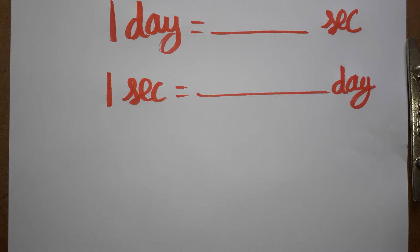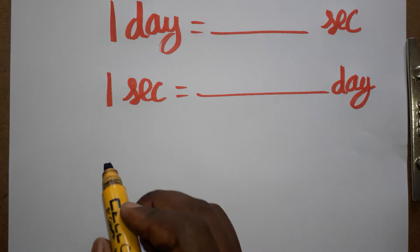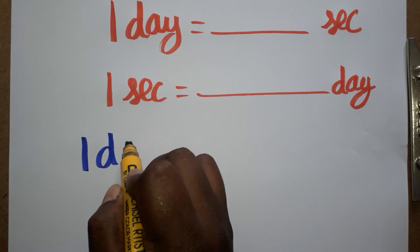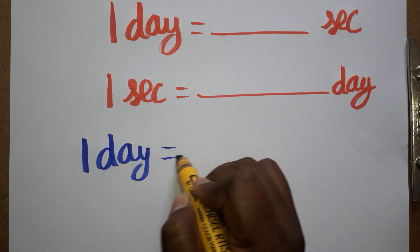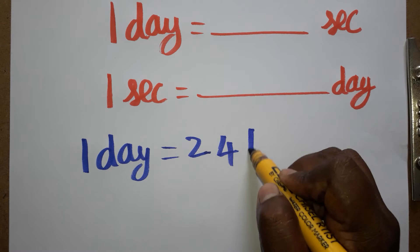Hello student, today we are going to see one day equals dash seconds, and one second equals dash day. First we will see one day equals dash seconds. One day is 24 hours, okay?